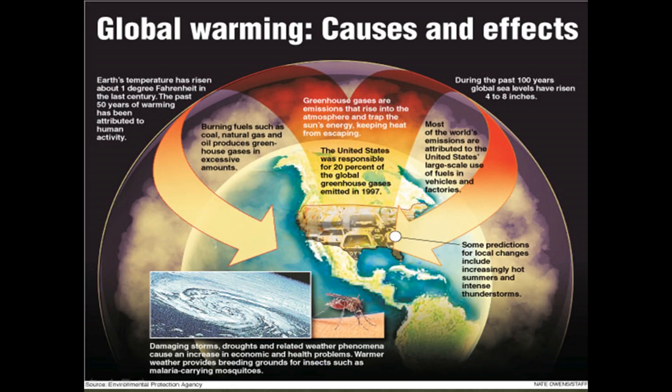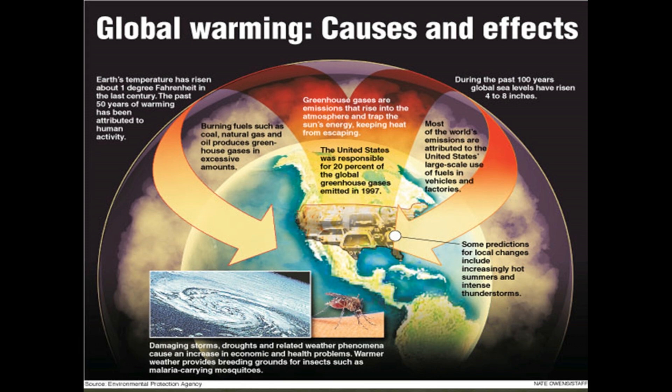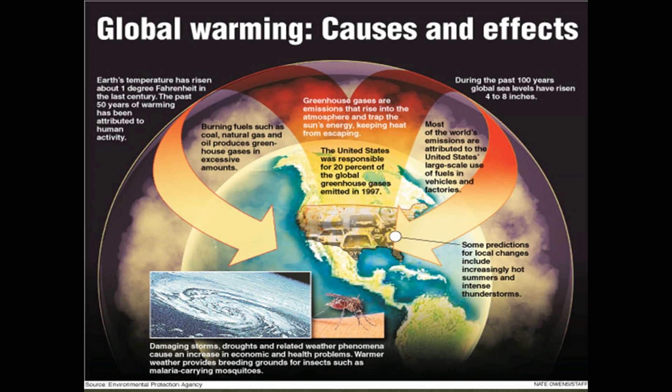Humans have produced greenhouse gases since the industrial revolution until now. Greenhouse gases are emissions that rise into the atmosphere and trap the sun's energy, keeping heat from escaping. This is why the earth is getting hotter every day. As the temperature rises, some parts of the earth, like the North Pole, the ice starts to melt.